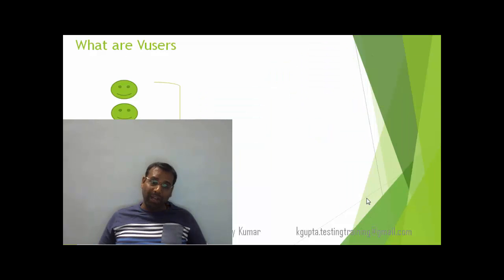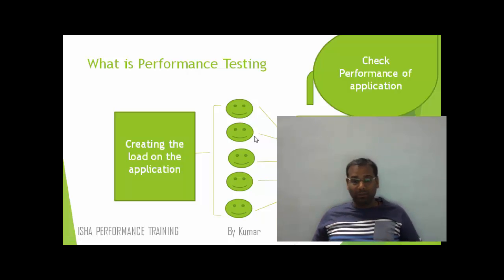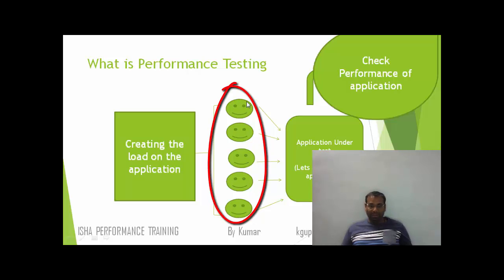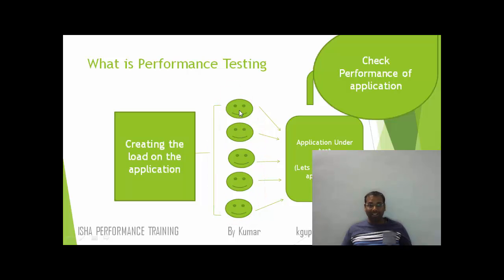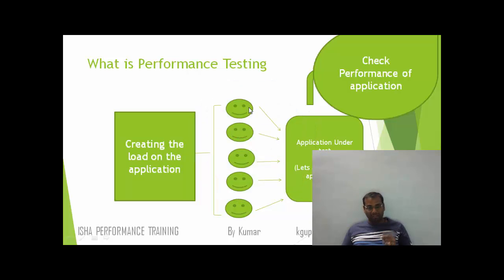So when we do performance testing, we don't do the testing with real users — we do the testing with virtual users, for the obvious challenges involved in using real users. One more thing to add: these five users in our example are using this application at the same point of time — in other words, we are applying the load of these five users on the application simultaneously. There is a special word for this: we call these users concurrent users. Concurrency is nothing but at the same point of time or simultaneously. Since these users are actively using this application at the same point of time, we call them concurrent users.